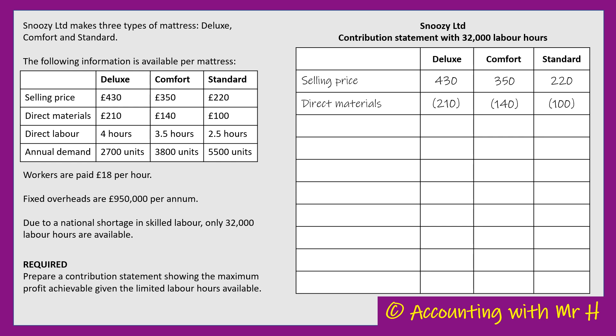We've also got some direct labour - another direct cost. These are the workers that are hands-on, involved in the manufacture of each mattress. They've told me to make a Deluxe it takes four hours of direct labour, but I need the figure in pounds. I can see underneath the table they said the workers are paid £18 per hour.